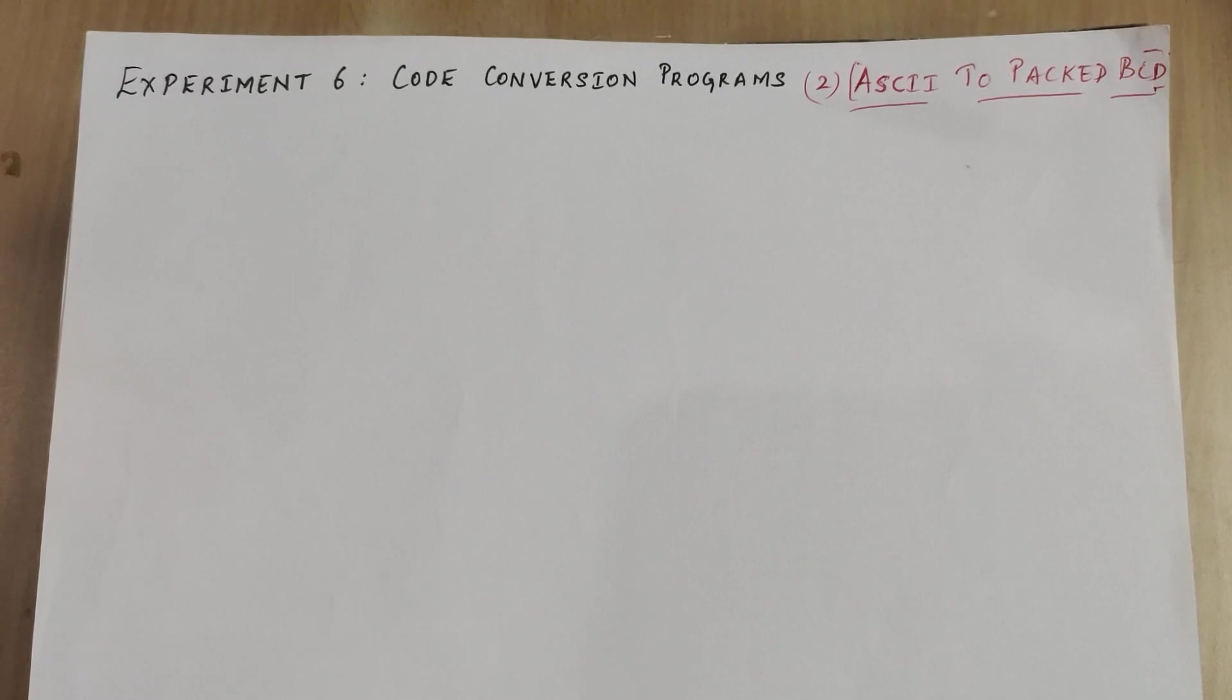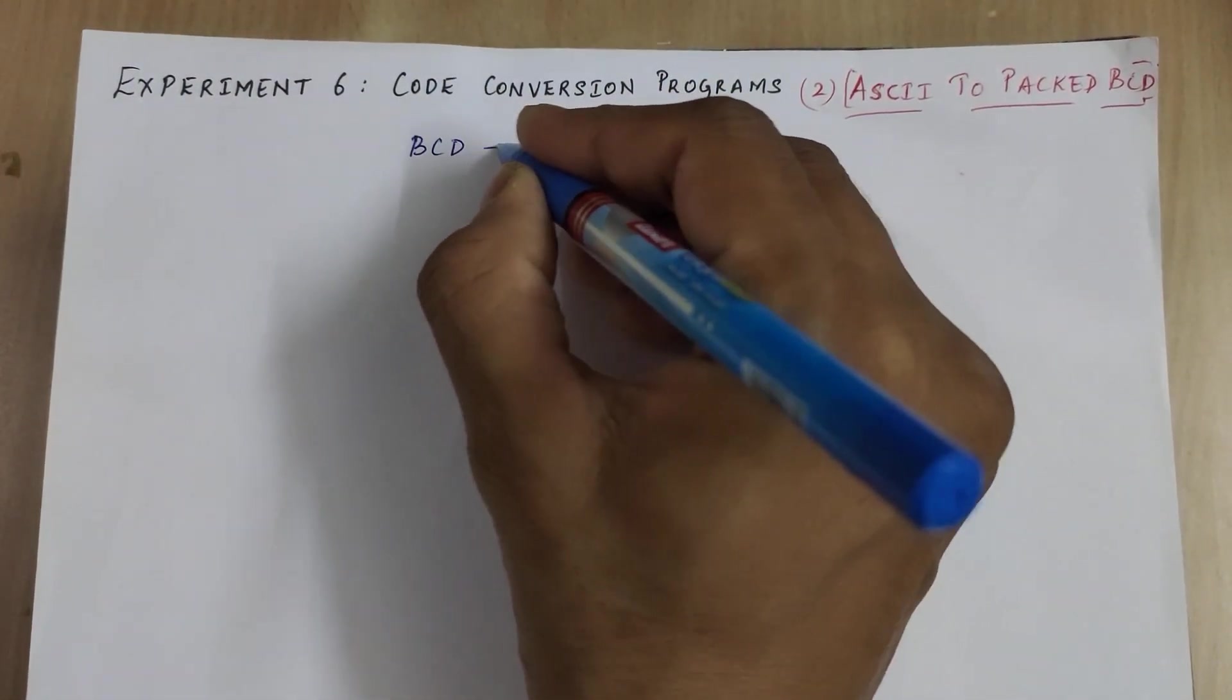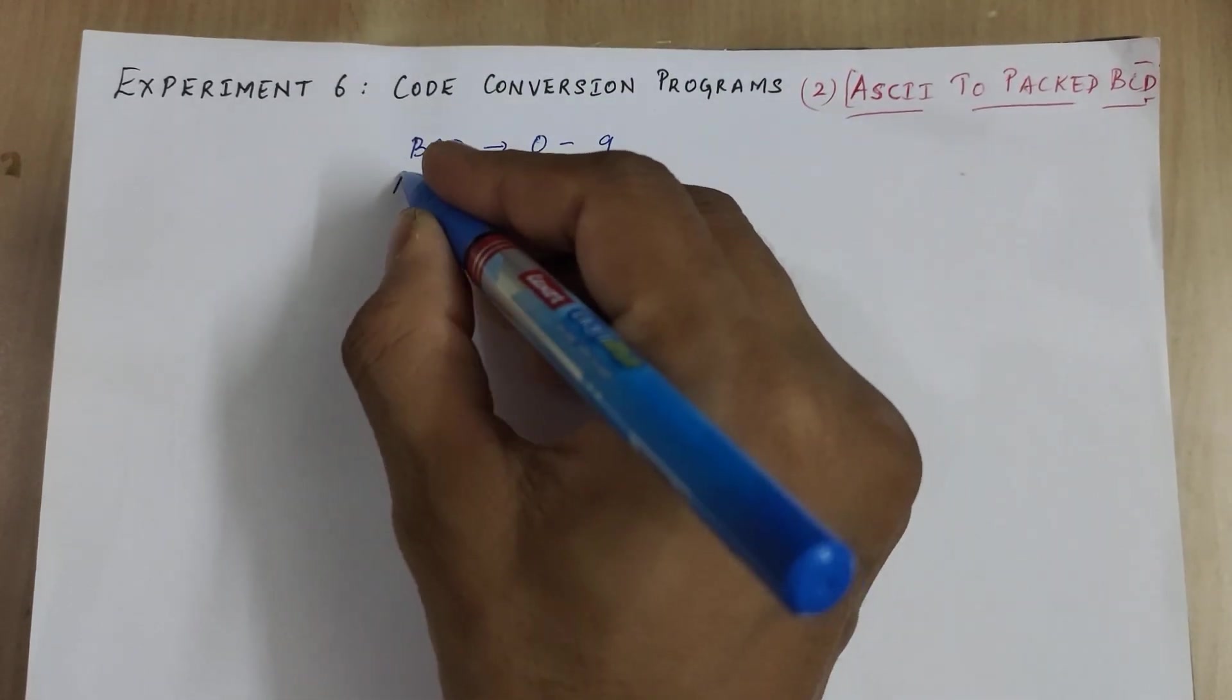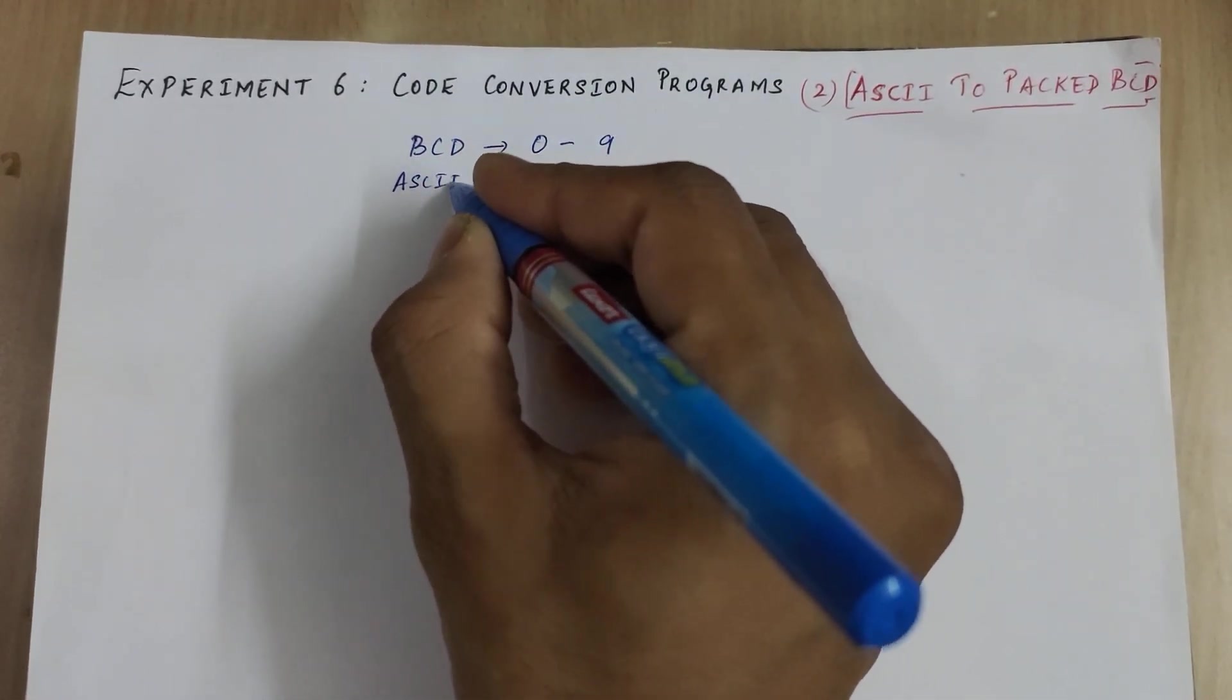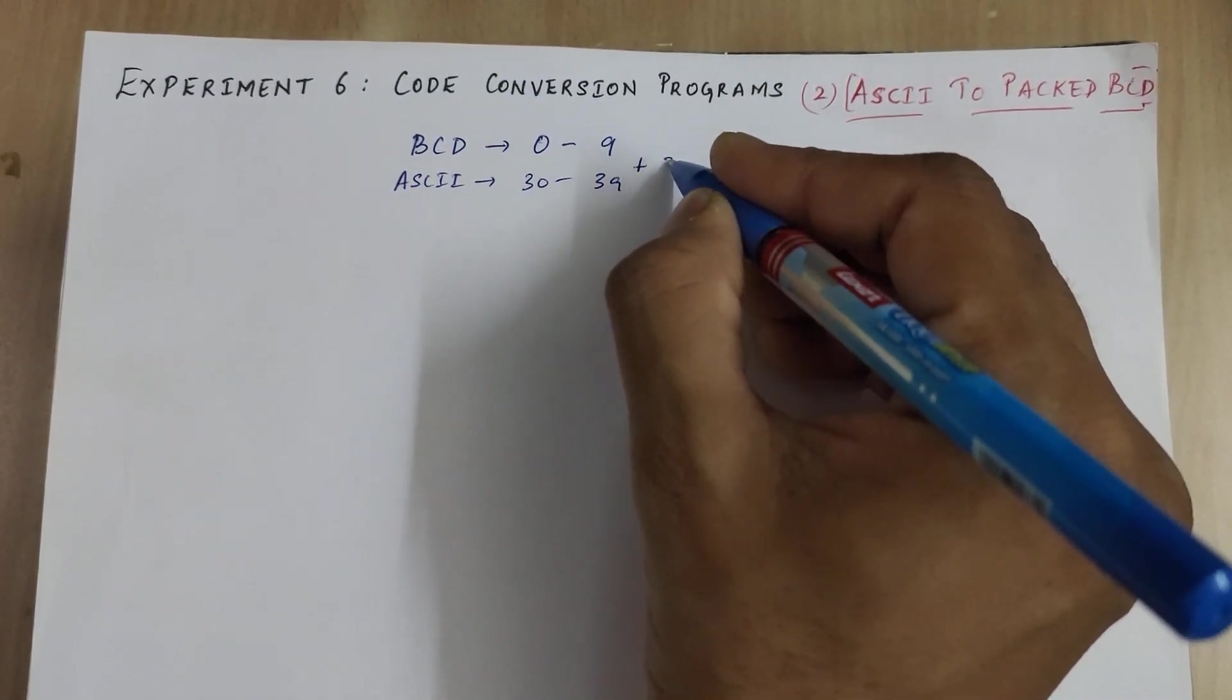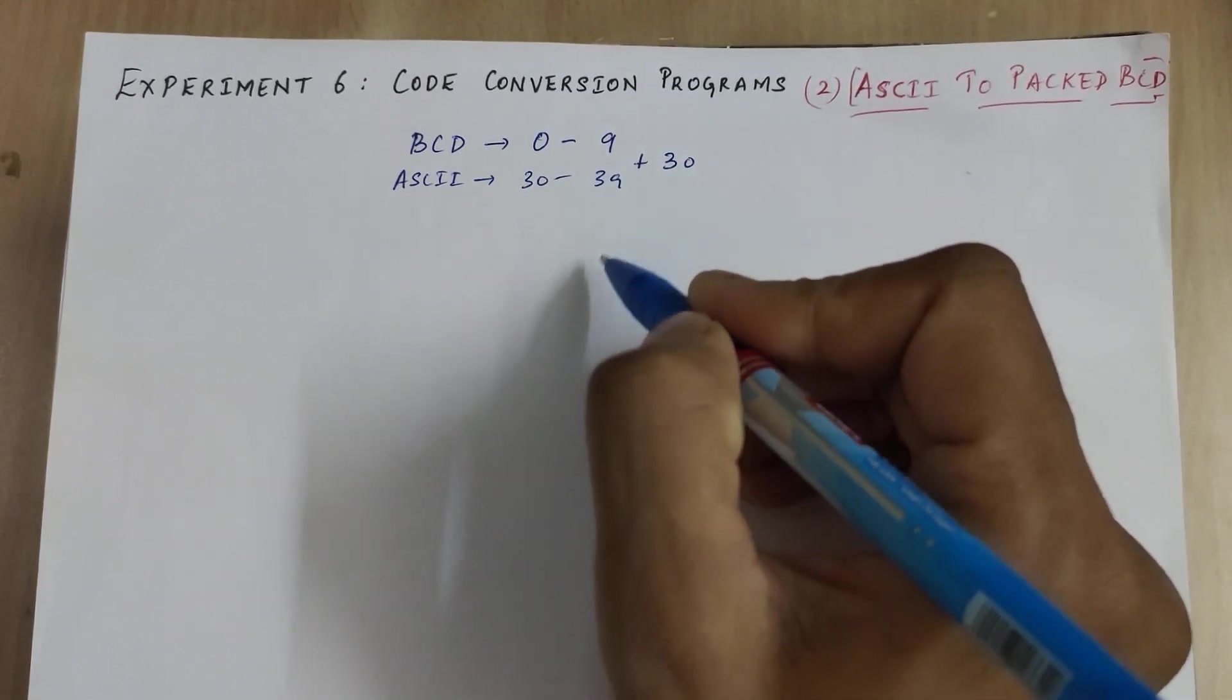This is the reverse conversion wherein we convert the ASCII number to its BCD. We know that BCD numbers have digits from 0 to 9 and the corresponding ASCII numbers are 30 to 39. By adding 30 to the BCD digit we obtain the ASCII numbers.